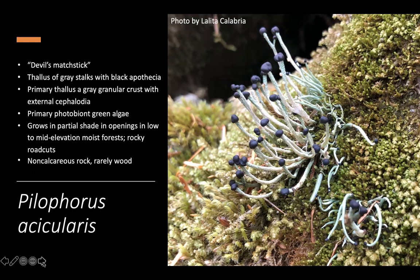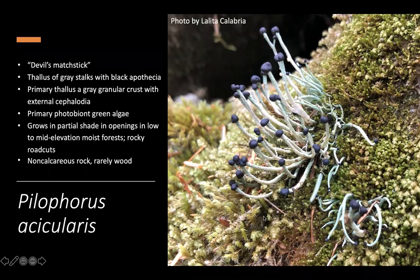Next in the scrubs, we have Pylophorus acicularis — this is devil's matchstick. As you can see, it looks quite like a matchstick. It's a thallus of gray stalks with black apothecia. The primary thallus, located on the actual substrate, is a granular gray crust with external cephalodia. The primary photobiont is green, which is what you're seeing in the stalks. This lichen grows in partial shade and openings in low to middle elevation moist forests and on rocky road cuts.